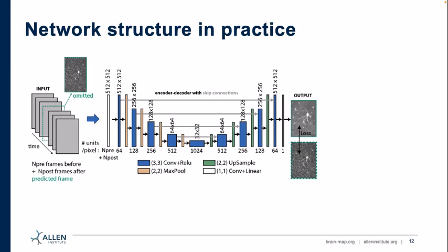This is an example network structure we can discuss in the second half. We looked at which meta-parameters are helpful. Essentially you take 30 frames before and 30 frames after the center frame, predict that center frame, and as you train, you converge to the mean of all possible pairs. There is also a relationship between pixels in space and time around the center pixel.